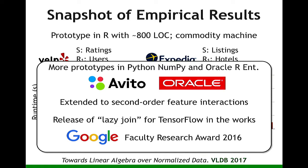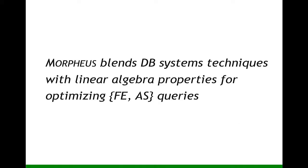We also extended Morpheus to non-linear feature interactions — for linear models, you want pairwise interactions of features to improve accuracy. We developed novel rewrites that push down through joins for feature interactions as well. For TensorFlow, we have both a factorized version and a lazy join version that avoids constructing the table for mini-batch gradient descent. Morpheus essentially combines classical database query optimization pushdowns with linear algebra properties to optimize the MST combining feature engineering for joins with algorithm selection.